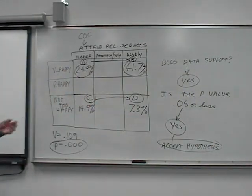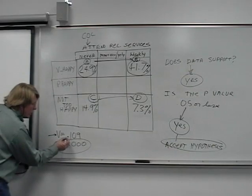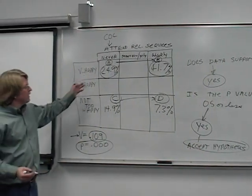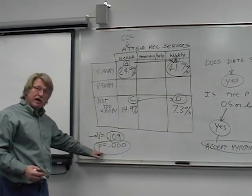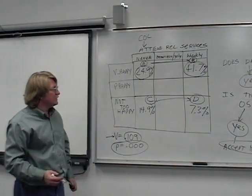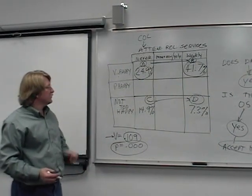Now notice, after we've accepted the hypothesis, we can go and look and say, what was the strength of the relationship? It's not an r-value because it's not a scatterplot. It's a v-value. The strength of the relationship is low-moderate, which is .109. So there is a relationship. It's consistent and reliable. The probability tells us that. It supports the hypothesis. And our probability is less than 0.05, so we have to accept our hypothesis.